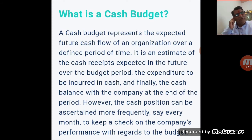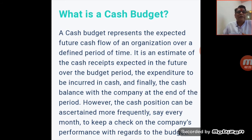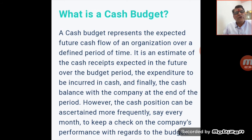Cash budget especially tells us: for a defined period, how much will be spent and how much income can be earned. The cash position can be assessed at a certain frequency — say every month — to keep a check on the company's performance with regards to the budget. A company can know its cash position for a defined period through the cash budget.